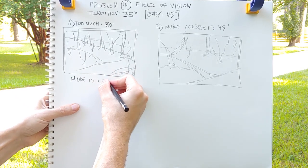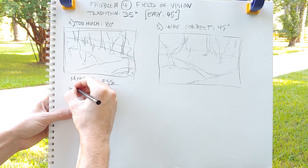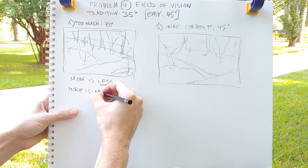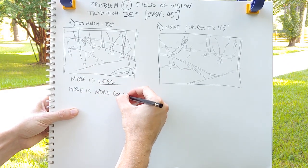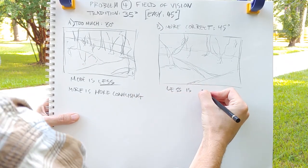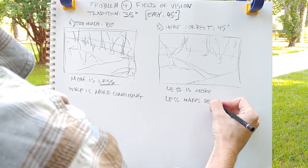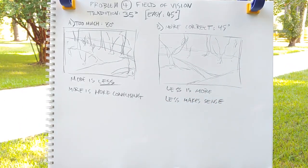So what I've come up with are a couple of little maxims. More is less and more is just more confusing. Conversely, less is more and less makes sense. So use a restricted field of vision to set up a more effective landscape.